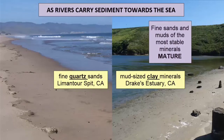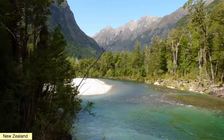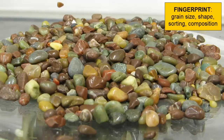The two most abundant minerals found in these long-traveled, mature sediment piles are quartz and clay. Sediment piles will vary around the planet depending on the materials that feed into them — they all have a fingerprint, a distinct character of varying grain compositions, sizes, shapes, and sorting.